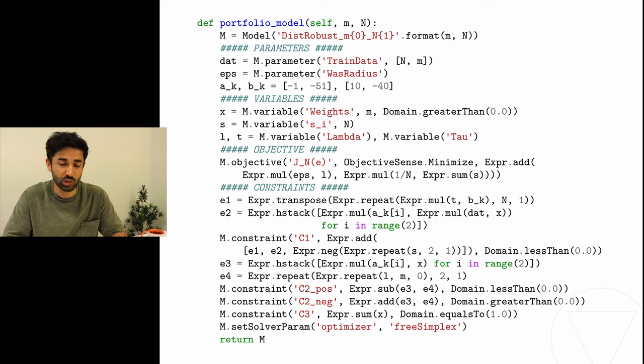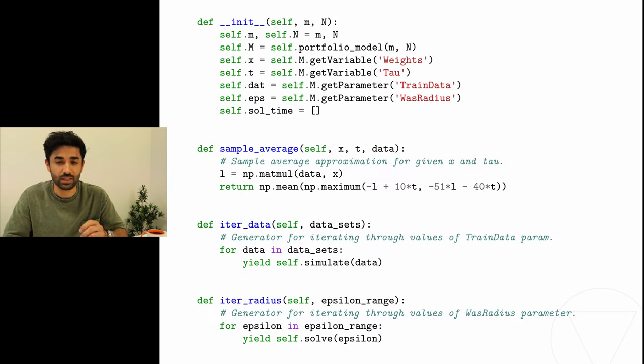But in this particular case, because we will be repeatedly solving the same model over and over again but with slightly different parameter values, it is better that we use simplex optimizer because we want to exploit the warm start capabilities of the simplex optimizer. As you will see, this will drastically decrease the solution times. With the model defined, we now look at the init method of our class.